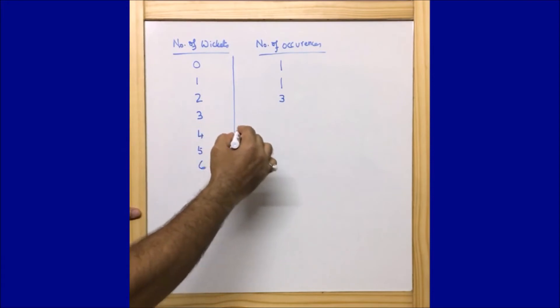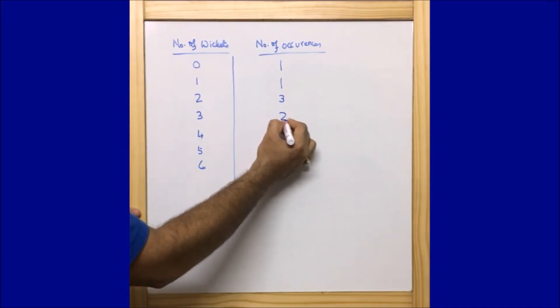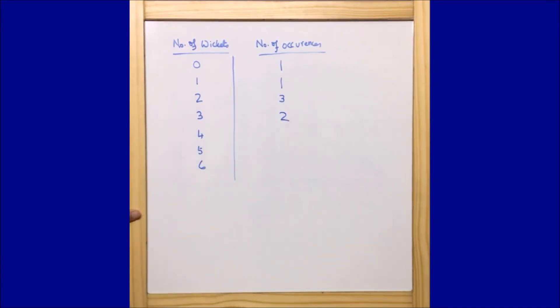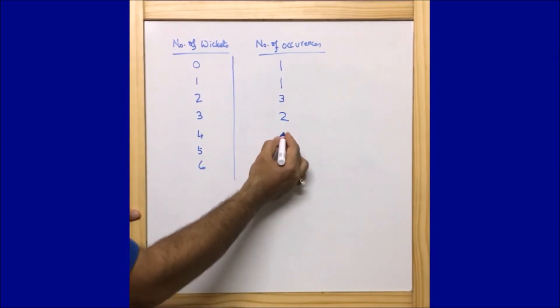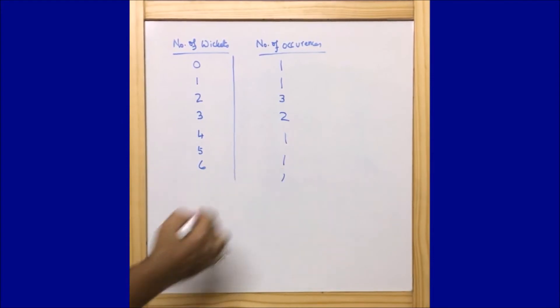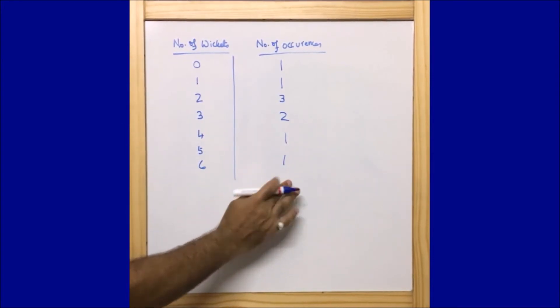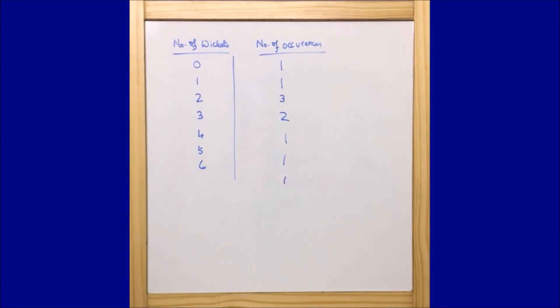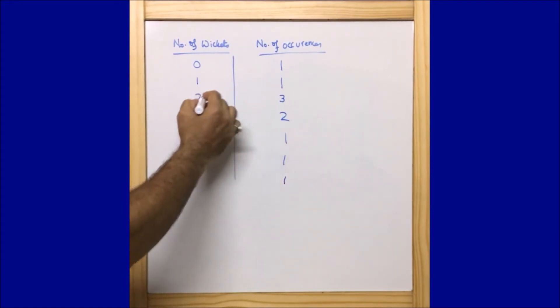Against three I am going to write two because two times three comes. Against four I am writing one, against five I am writing one, against six I am writing one.